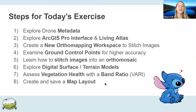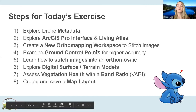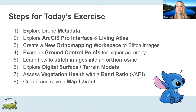Steps for today's exercise: explore the metadata, look at ArcGIS Pro and Living Atlas, create a new orthomosaic workspace, look at ground control points, learn how to stitch images into an orthomosaic and digital surface and terrain models, look at vegetation health with a band ratio using red, green, and blue bands, and then create a map and export it.